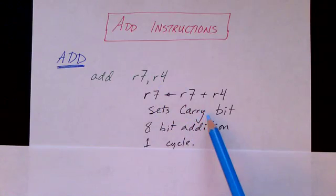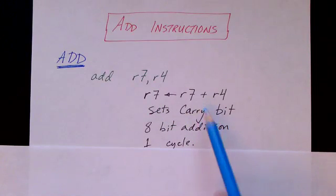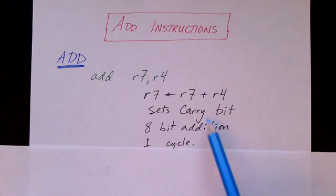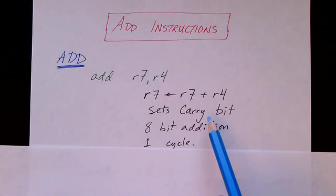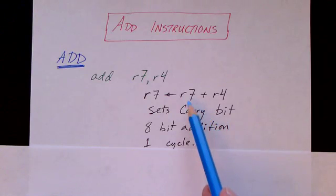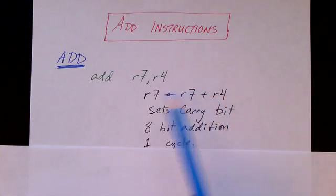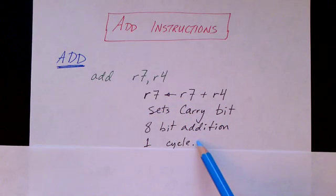This instruction also sets the carry bit, so if there is a carry out of this 8-bit addition, the carry bit in the status register will be set. Remember that every register is 8 bits, so this is an 8-bit add instruction and it can be executed in a single cycle.